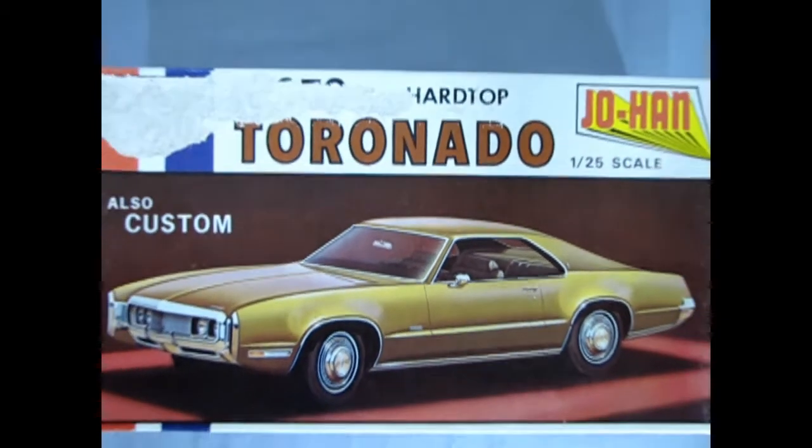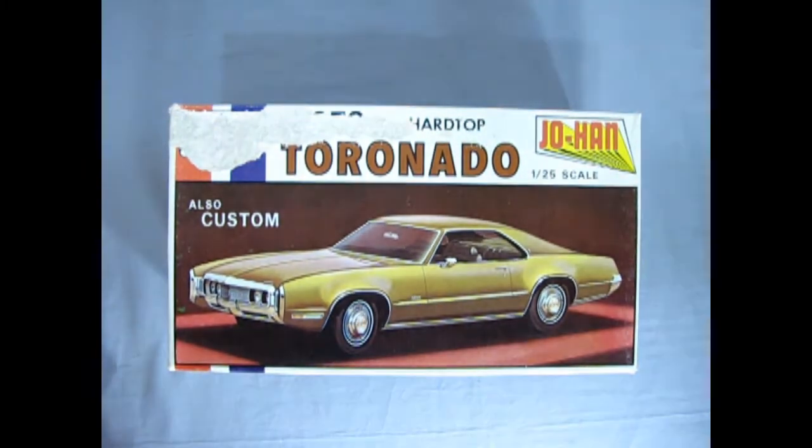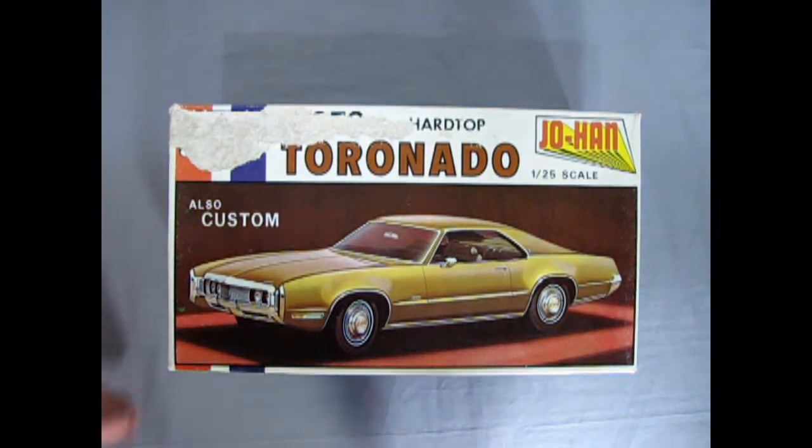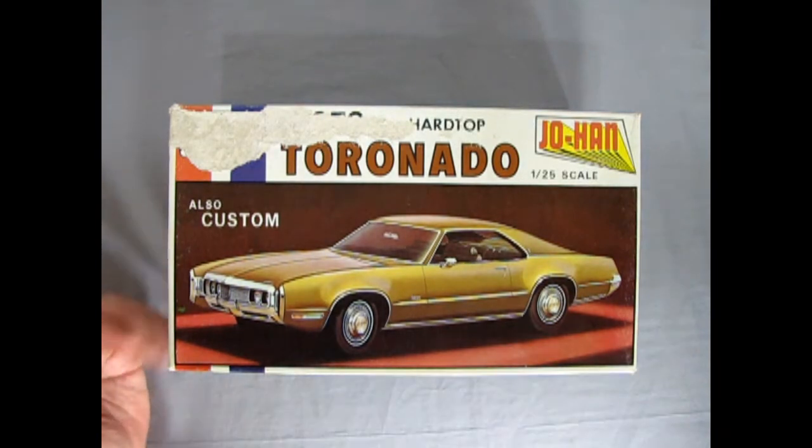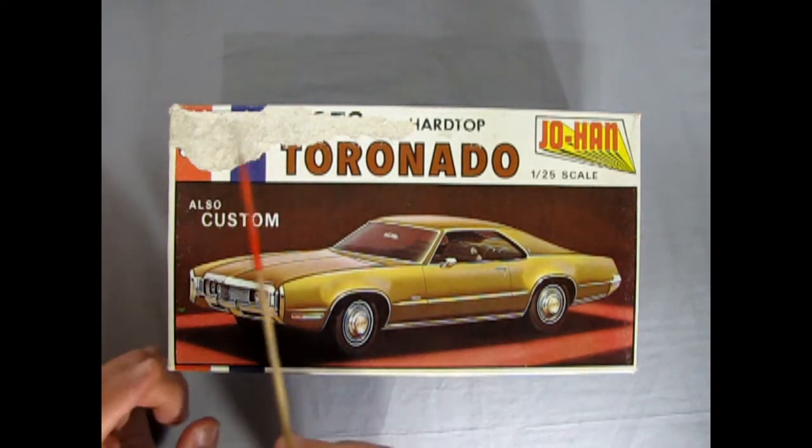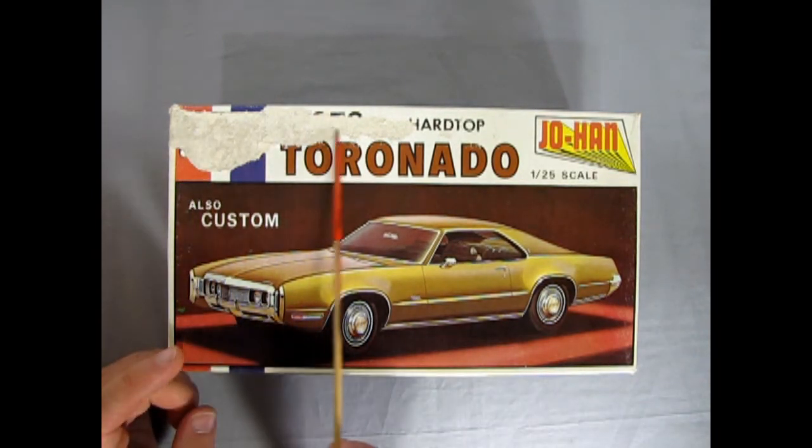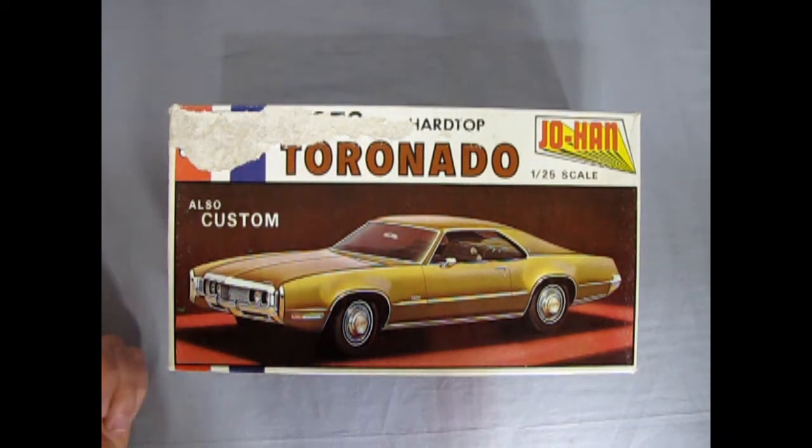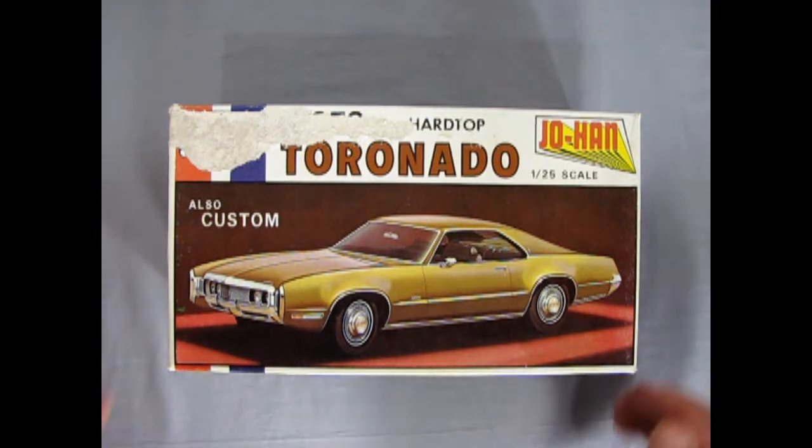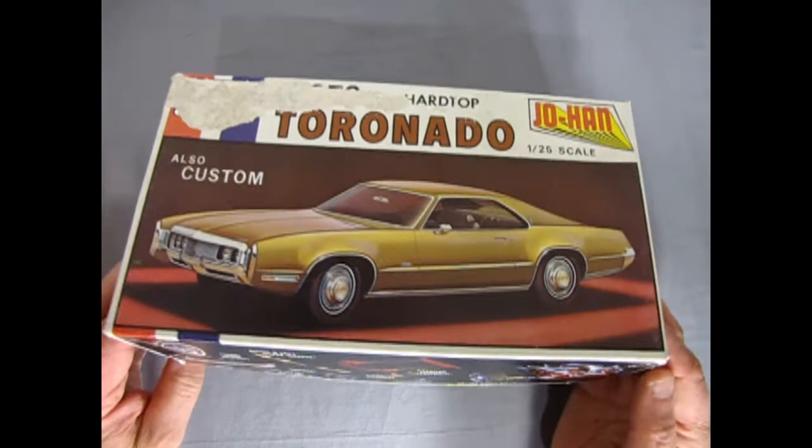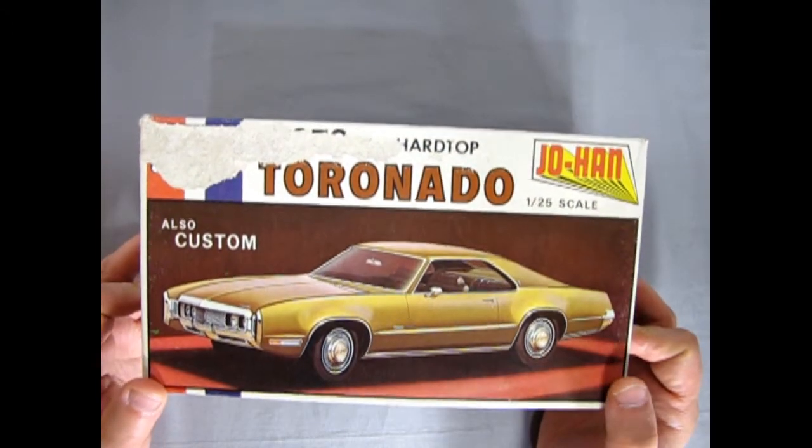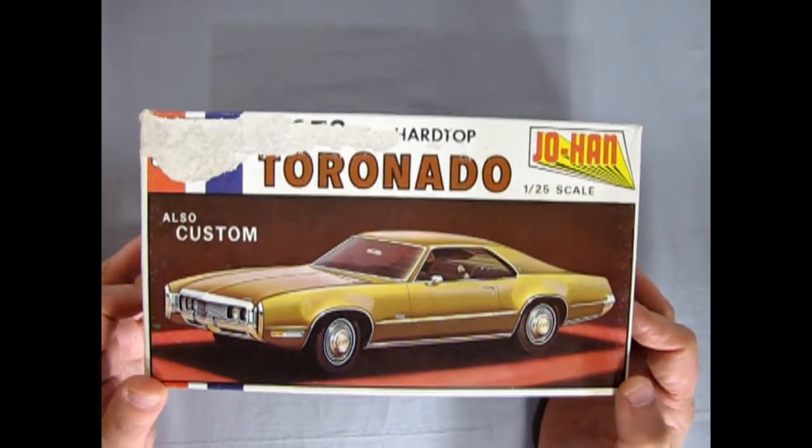And now we return once again to the GM Oldsmobile showroom as we get to check out this amazing 1970 Johan Toronado. So of course this kit I got from somebody and unfortunately there's a big peel off of the top of the box here, however this model kit is in 1/25th scale. You can also build it as custom and the one thing I love about Johan kits of course is the hand-drawn or the drawn artwork looking like something right out of an old showroom brochure of the time period.